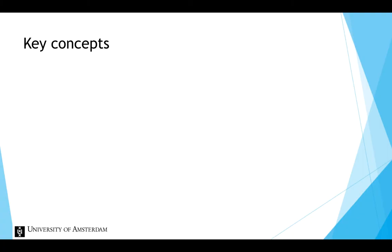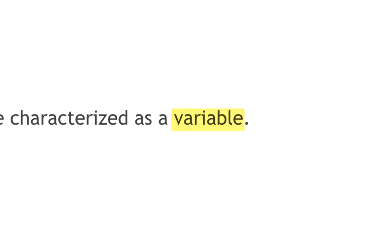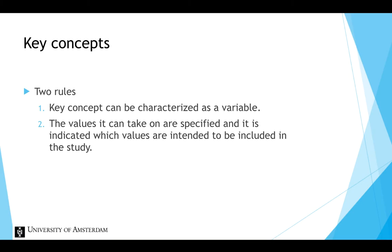Regarding the key concepts in a conceptual model, two rules apply. The first rule states that the key concepts can be characterized as variables. A variable is any entity that can take on different values. The second rule states that the values a concept can take on should be specified, and it should be indicated which values are intended to be included in the study.